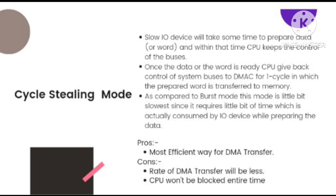Since it requires longer time for data to get ready, this mode is slower compared to Burst Mode but more efficient. Talking about the pros of Cycle Stealing Mode — it is the most efficient way for DMA transfer. Talking about the cons — the rate of DMA transfer will be less as the process is a bit slow, and the CPU is blocked for the entire time in cycle stealing mode.